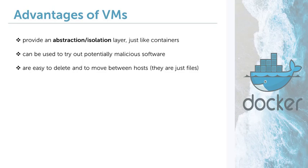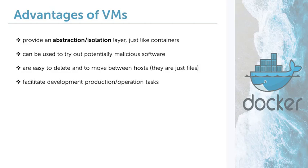Also, as VMs are just files, they can be easily transported from one physical machine to another. VMs make many production operation tasks a lot easier, for example managing dependency versions, running legacy software, or running multiple instances of a certain service. As VMs can also interact with each other, they can be used as a way for segregating each software service necessary for a certain enterprise, so that each component is easier to maintain while the entire system still works just as expected.